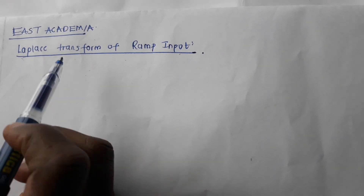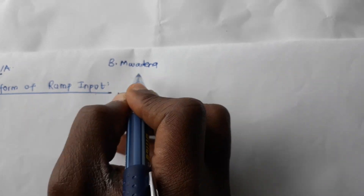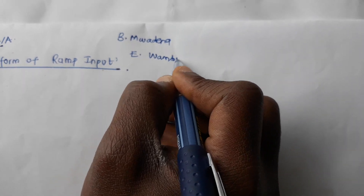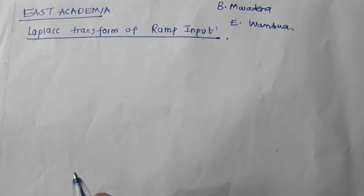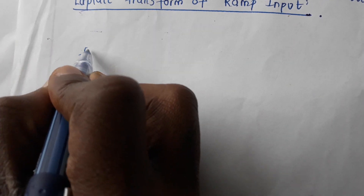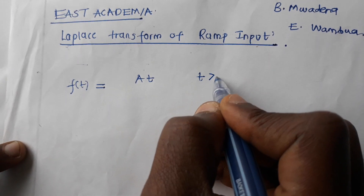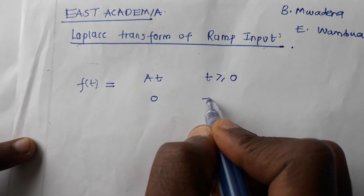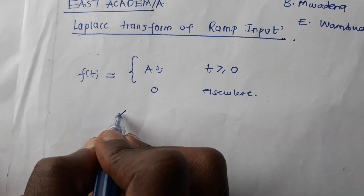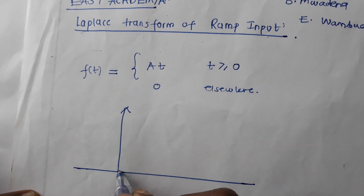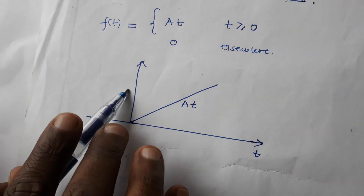Welcome to East Academia. My name is Brian Modena and my colleague is Emmanuel Wambua. Today we are going to look at the Laplace transform of a ramp input. The ramp input is defined as f(t) = at for t greater than or equal to 0, and 0 elsewhere. Diagrammatically, this can be drawn as follows — this is 'at', this is t, and this is the amplitude.